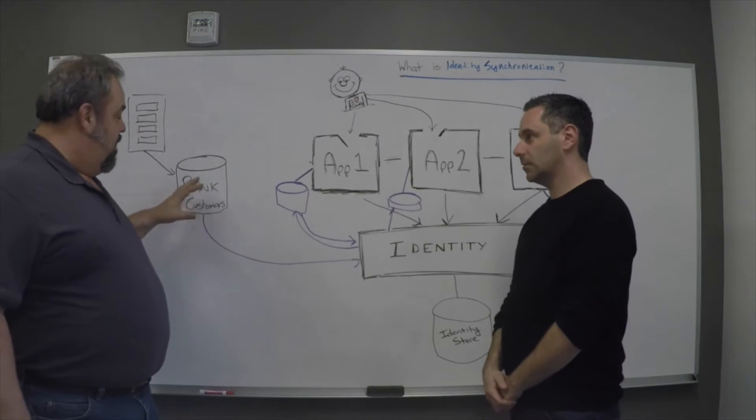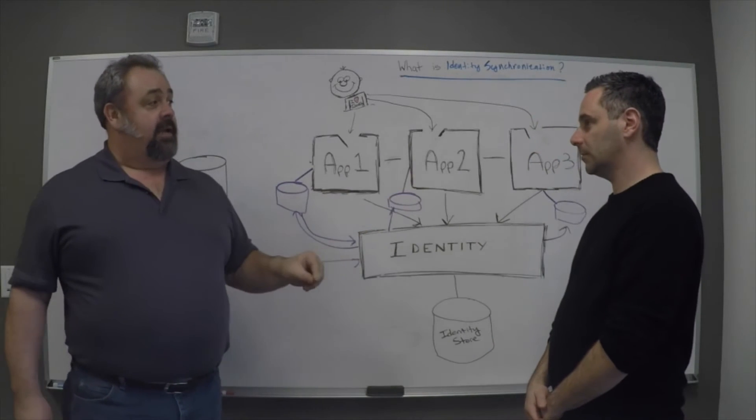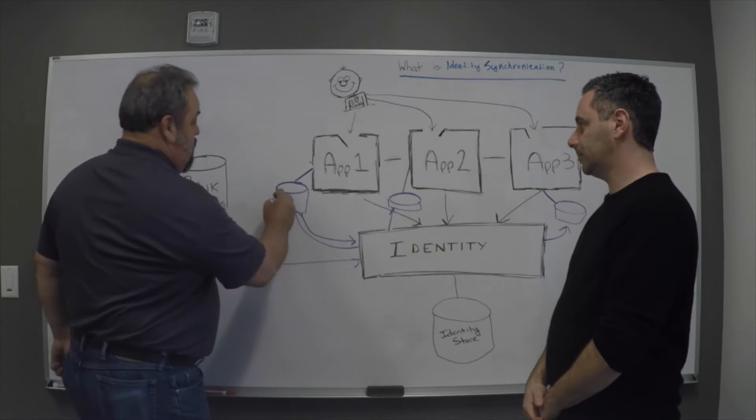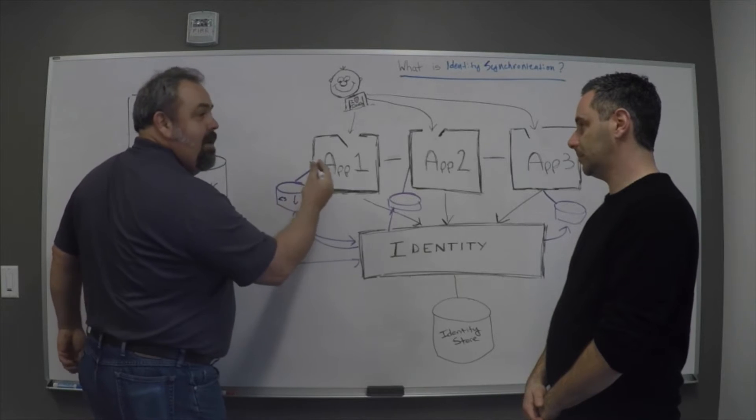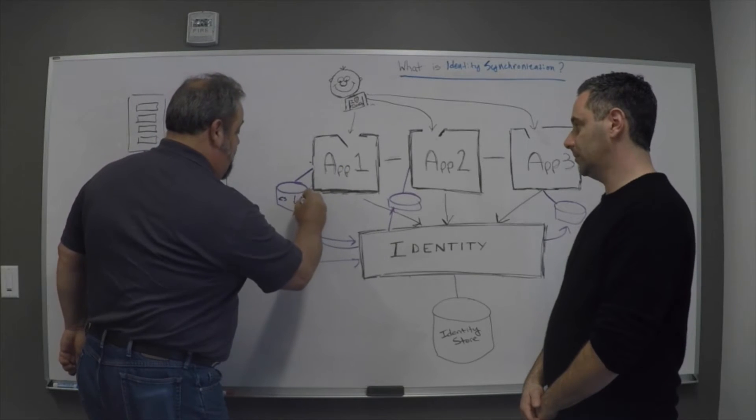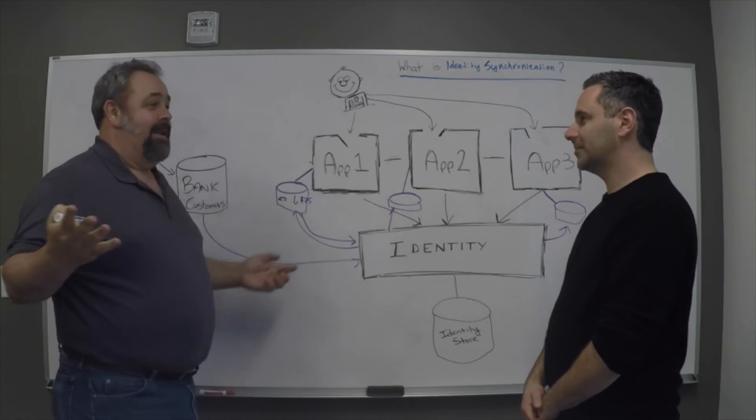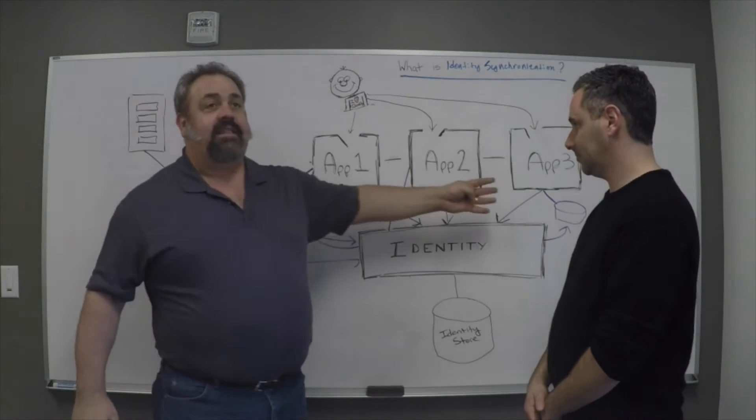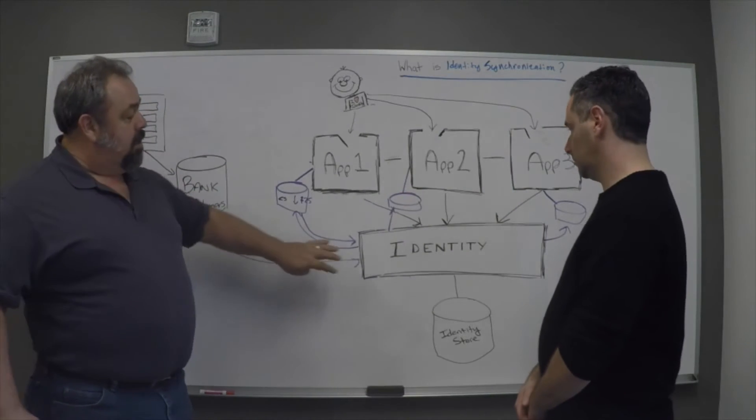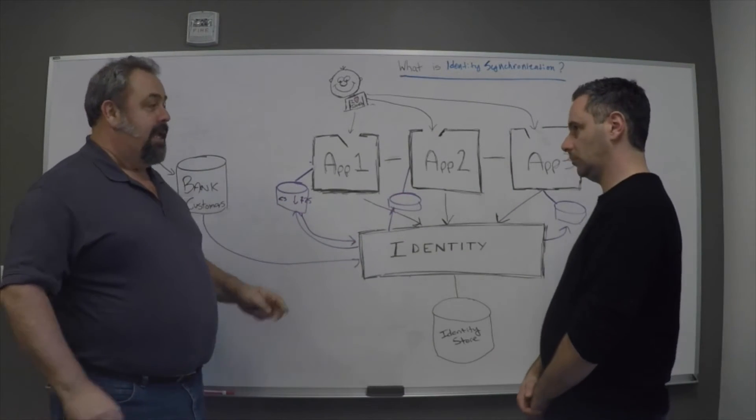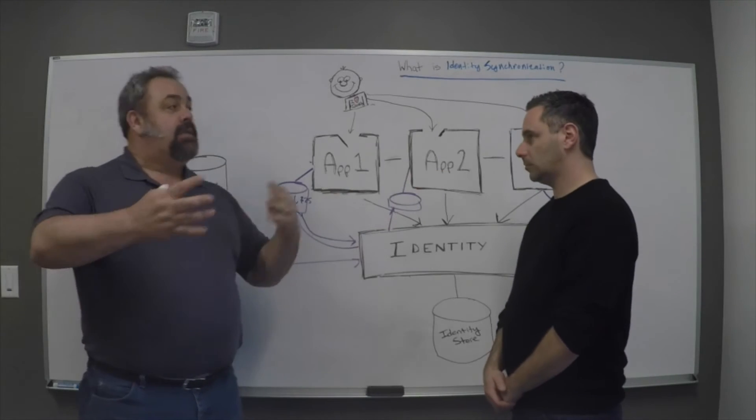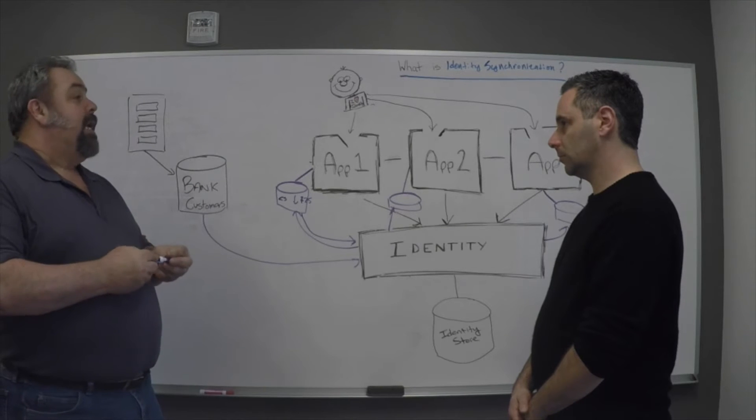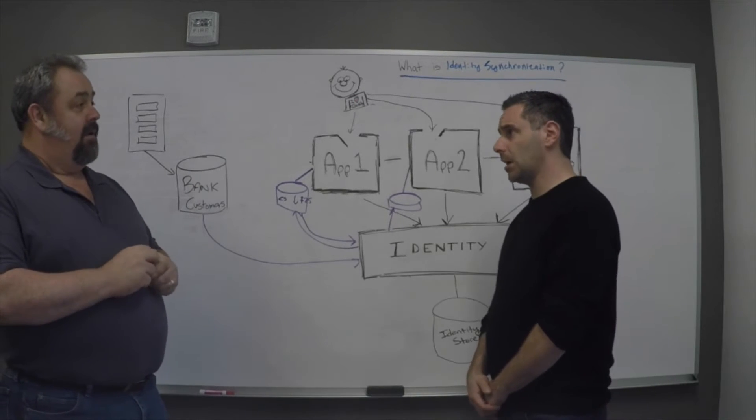And not only are we orchestrating the synchronization of that identity, but as the credit application changes your credit score—let's say it's now down to 425, you had a bad month—when your credit score goes down, we want that to be propagated to all of the other places that care about it. And so part of the synchronization is watching all of the places that we have identity information and making sure that they're all in sync.